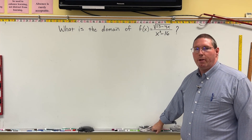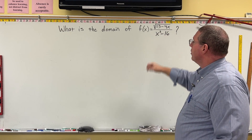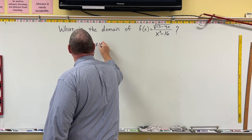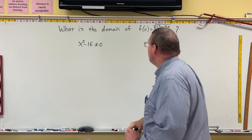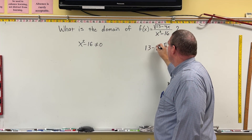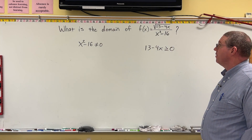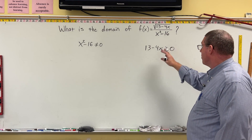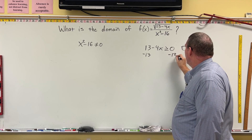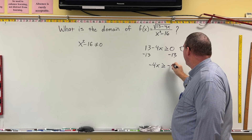Here's one last example. We identify the domain of a rational function where x² minus 16 is in the denominator and √(13 − 4x) is in the numerator. The denominator cannot equal zero, so x² minus 16 cannot equal zero. The numerator is a square root, so 13 minus 4x has to be greater than or equal to zero.